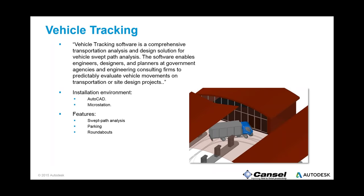Vehicle Tracking is not just for vehicle tracking per se. Most people think about it as: select a vehicle, give it a center line, and see the extents of that vehicle to plan a road. Autodesk Vehicle Tracking will do that, but it also has swept path analysis, a parking lot tool, and roundabout design. Vehicle Tracking installs on AutoCAD or AutoCAD products like Civil 3D, but if you're a MicroStation user it also installs there.